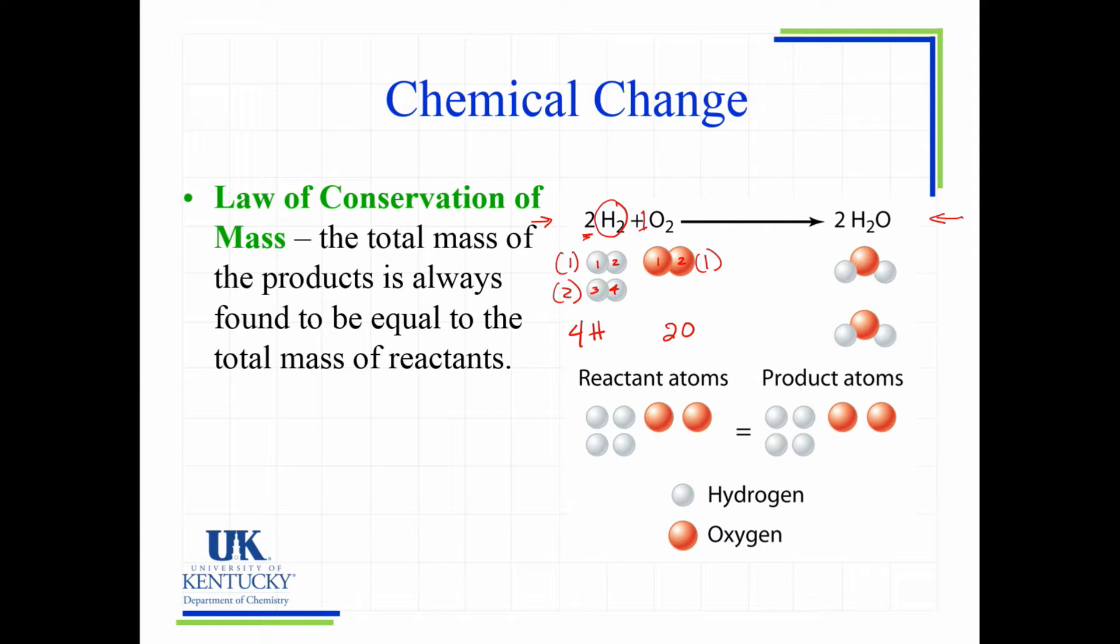two oxygens. And I have one, two, three, four hydrogens. So that is what we mean when we are obeying the law of conservation of mass. You have to have the same number of atoms of reactants as the same number of products, atoms of products.